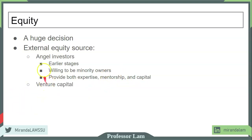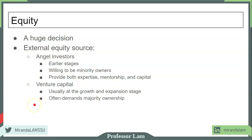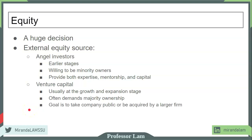The next stage after angel investors is typically a venture capital firm. A venture capital firm typically only invests in larger investments and comes in at a later stage — usually the growth and expansion stage. They typically demand majority ownership and want to take control of the firm. This is a huge decision. The goal of a venture capital firm is not long-term investment, but rather to either take the company public or sell it to another firm, making VC an intermediate stage to take the company to the next level.